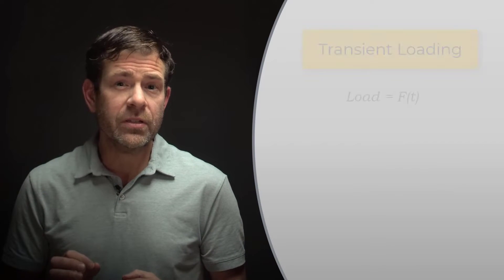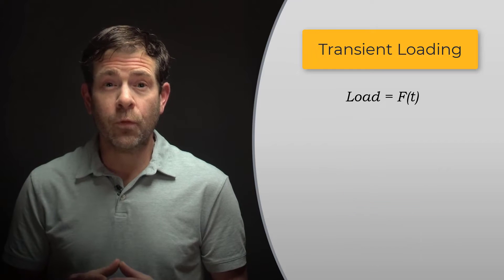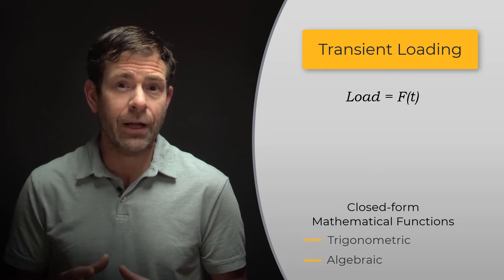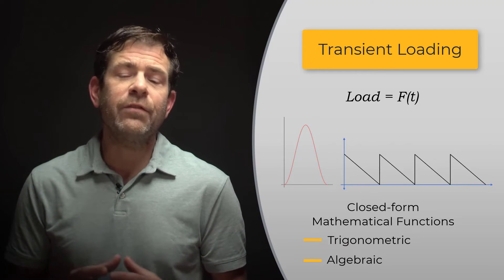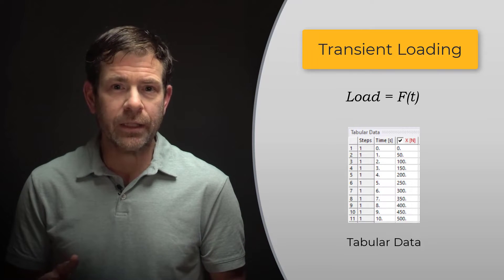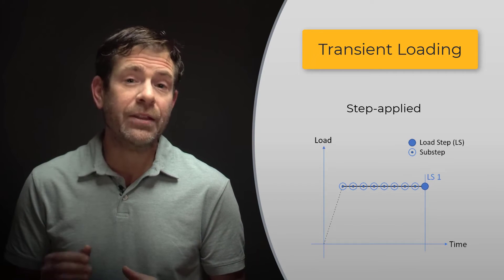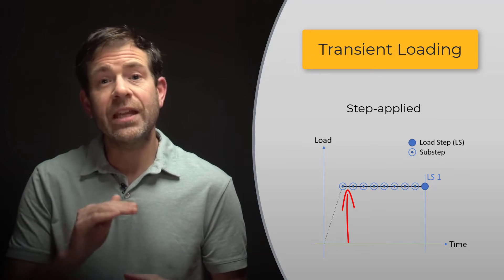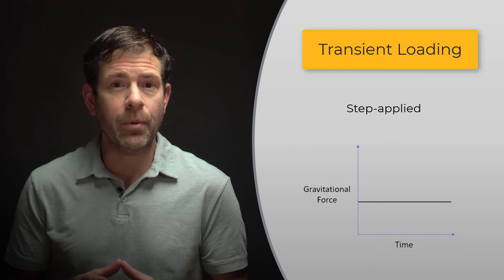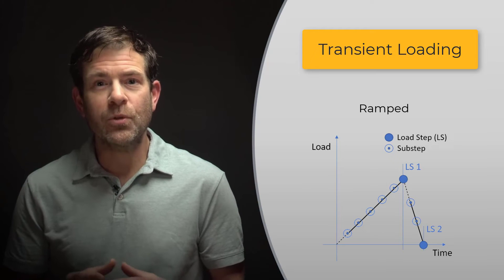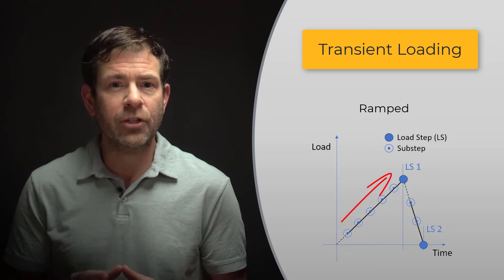Inputs are excitations consisting of loads that are a function of time, and they can be defined as a constant over time, or based upon closed-form mathematical functions like trigonometric or algebraic to simulate, for example, a half sine or sawtooth excitation. The loads can also vary according to tabular data, which can be entered directly or even imported and copied and pasted. These values can be step applied, meaning the value is applied at the first step and jumps suddenly and stays constant — for example, to account for the acceleration due to gravity, standard earth gravity is step applied. Or they can be ramped, which implies the value increases linearly at each substep, like a triangular waveform as input.